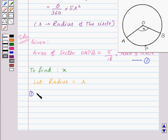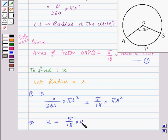So ① implies that the area of sector OAPB, which is given by (x/360) × πR² (where θ = x and radius = R), equals (5/18) × πR². This implies x = (5/18) × πR² × (360/πR²).